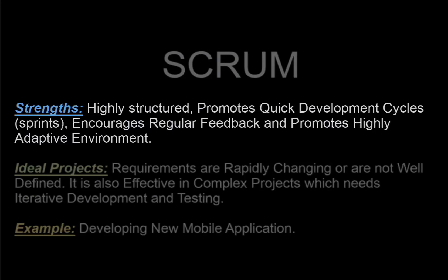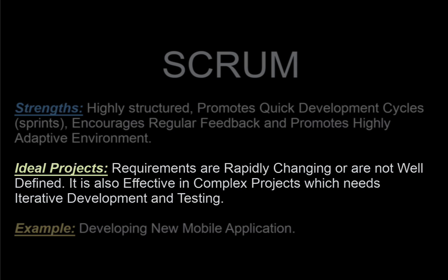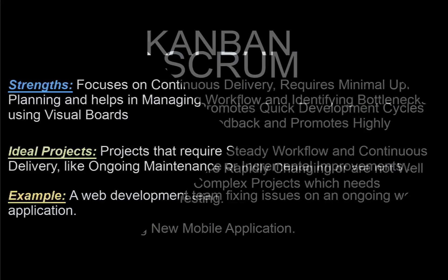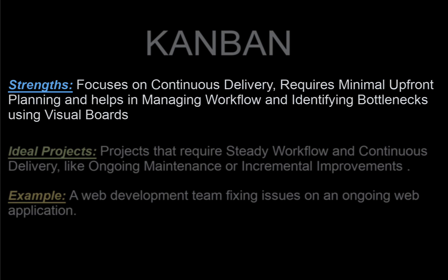Scrum strengths: highly structured, promotes quick development cycles called sprints, encourages regular feedback, and promotes a highly adaptive environment. Ideal projects for Scrum are those where requirements are rapidly changing or not well defined, and complex projects needing iterative development and testing. An example would be a project building a new mobile app that needs quick feedback from clients and must adapt to changing market needs. Kanban strengths: focuses on continuous delivery, requires minimal upfront planning, and helps manage workflow and identify bottlenecks using visual boards.